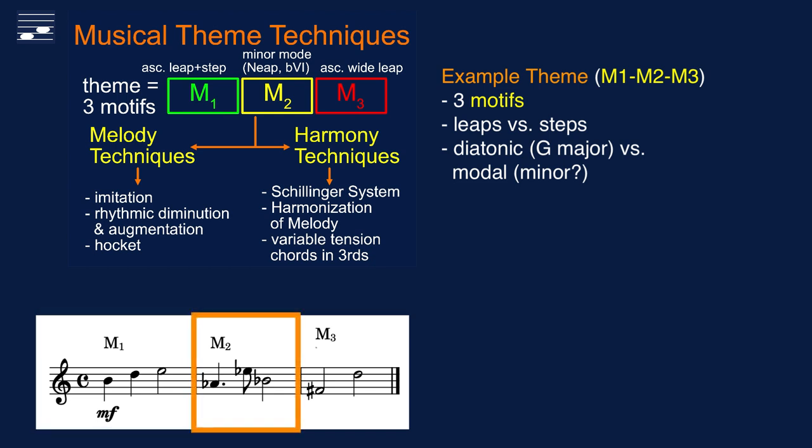The second motif, with the two leaps connecting Ab, Eb and Bb, suggests a minor mode, and has either neapolitan or lowered sixth degree character.